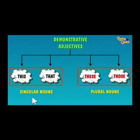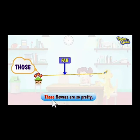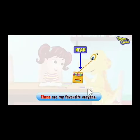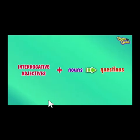This and that are used singularly; these and those are used plurally. This and these refer to near things, while that and those refer to far things. For example: 'Those flowers are so pretty' — flowers are plural and far, so we use 'those.' 'These are my favorite crayons' — crayons are near and plural, so we use 'these.'